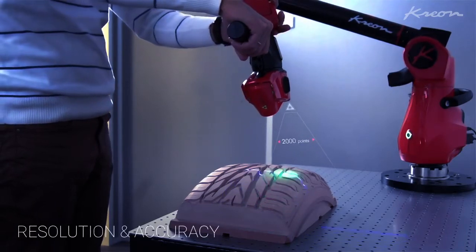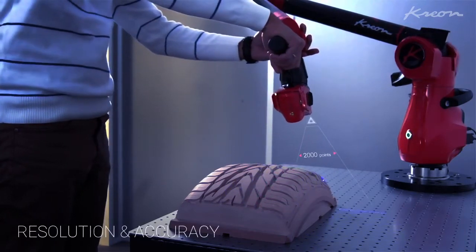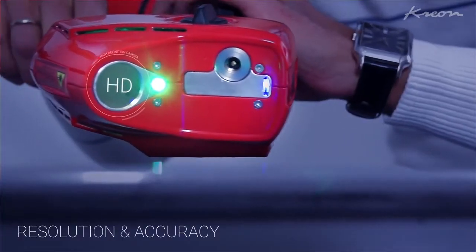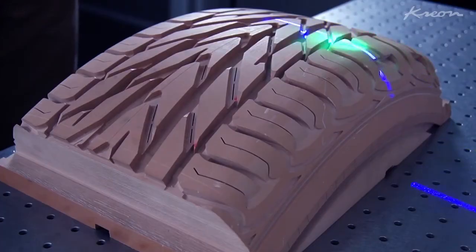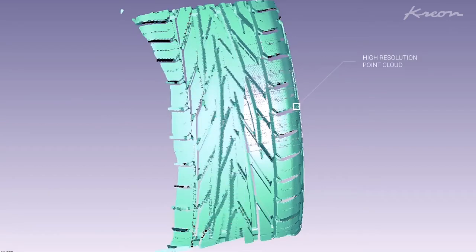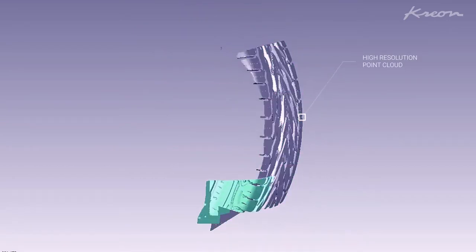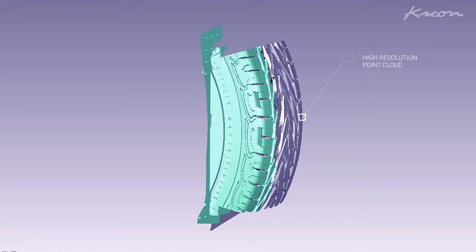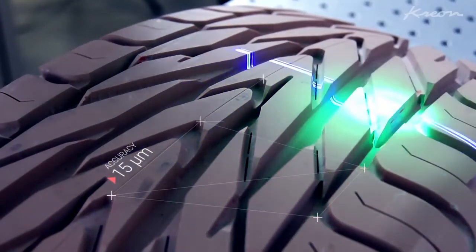The Skyline 3D scanner can scan complex parts thanks to a high definition camera and a 2,000 point laser line. It quickly produces high resolution point clouds and acquires the tightest details. Due to its 15 micrometer accuracy, it deals with the most challenging measuring requirements.